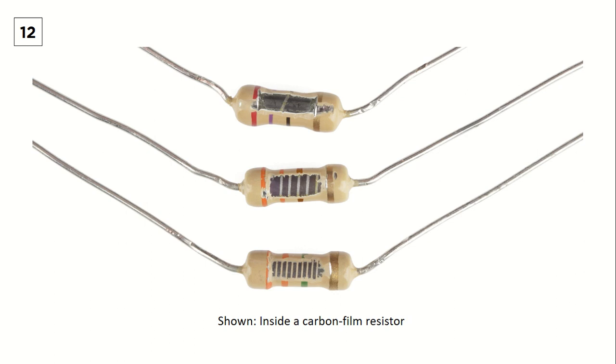If we scrape off the coating of a carbon film resistor, we can see that inside, a carbon film is wrapped in a spiral pattern around the ceramic substrate, a form of insulator. Some have more wraps in them than others, which means that they have more resistance.